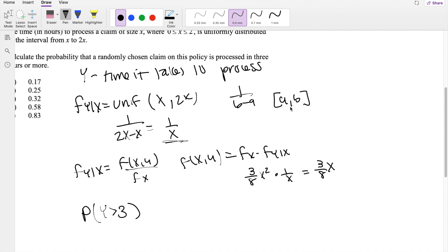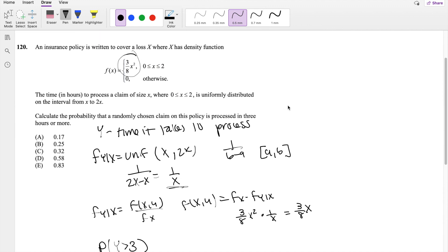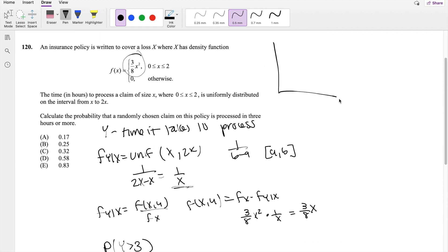I'm actually going to draw this graph out real quick. So this is like 0 to 2, right? And let this be y equals x, and let this be equal to y equals 2x. We know that x exists from 0 to 2, so let this be 2. Then we know that this point right here is 2, and this point right here is 4. And we're asked to find the probability that y is greater than 3, so let's say this is like 3. It's like this area right here, basically.